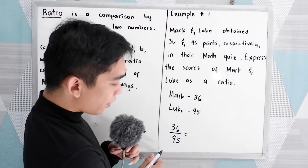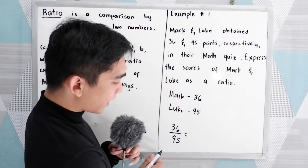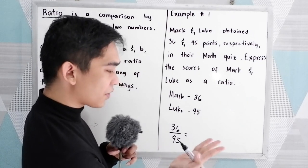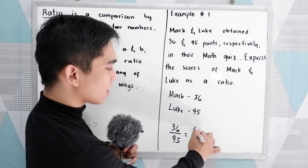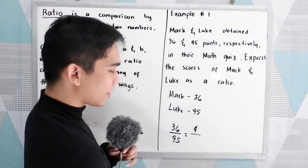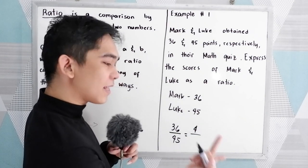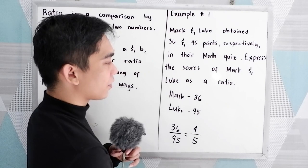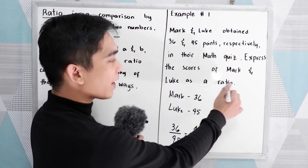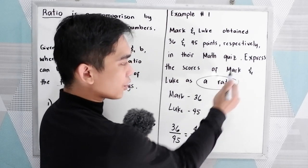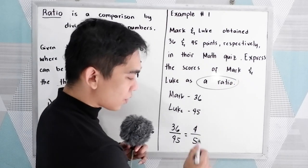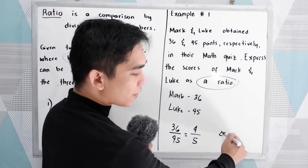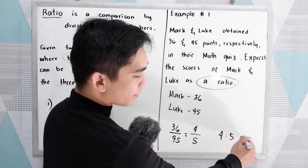36 and 45 can be reduced to lowest terms. They are both divisible by 9. So 36 over 9 is 4 and 45 over 9 is 5. Our final answer is 4 is to 5.